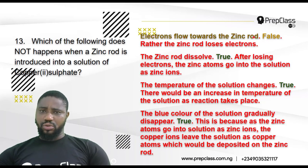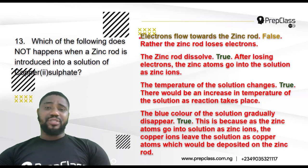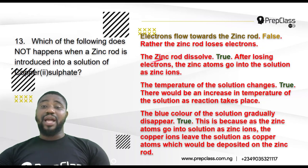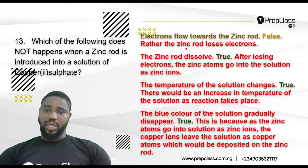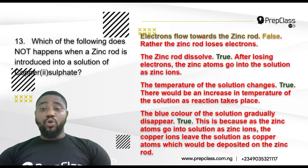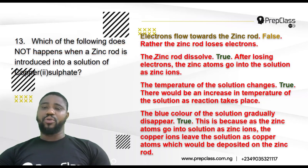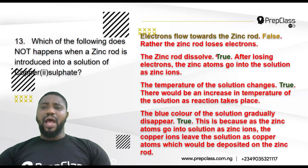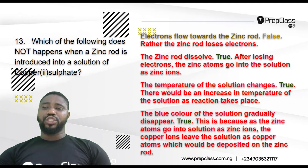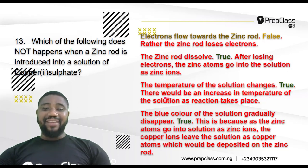Option A — electrons flow towards the zinc rod. That is false. What actually happens is that the zinc rod loses electrons and goes into solution as zinc ions. So electrons actually leave the zinc rod rather than flowing towards it. That means option A does not happen — it is false. Option B — the zinc rod dissolves. That is true; after losing electrons the zinc atoms go into solution as ions.